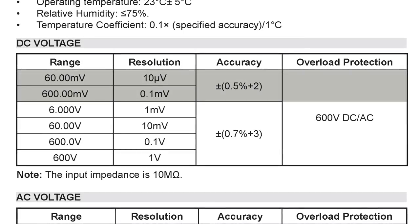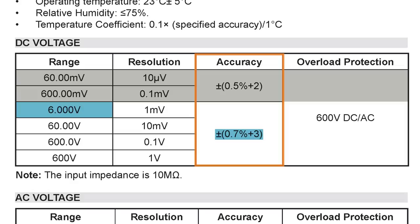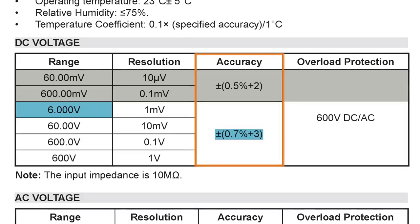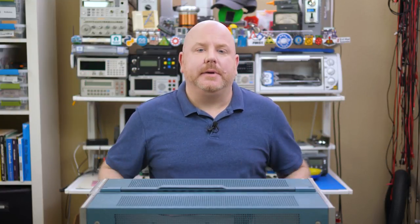Notice that different voltage ranges and functions have different accuracies. So, for the 6 volt range, it has an accuracy of plus or minus 0.7 percent plus 3. Okay, what does that mean?